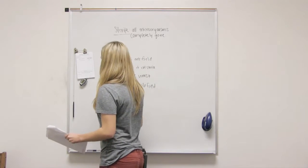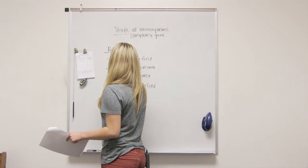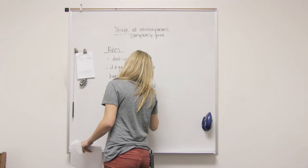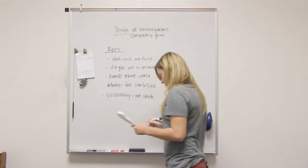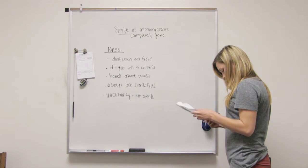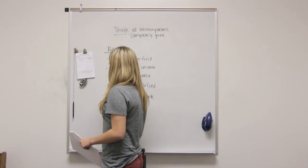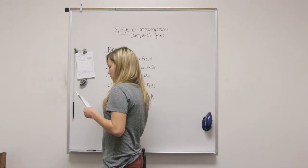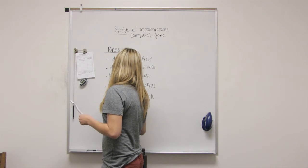If you're uncertain about something like, is it sterile or not, just consider it not sterile. Okay. So, uncertainty equals not sterile. Okay. What, how big is the border? The sterile border? One inch. Yes. On the other side. Yep.